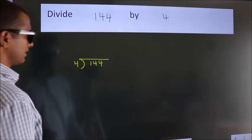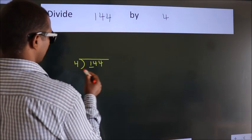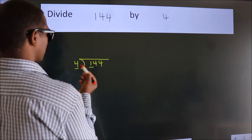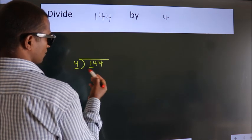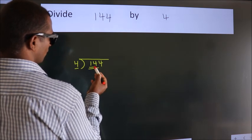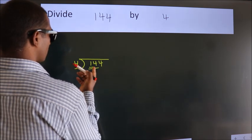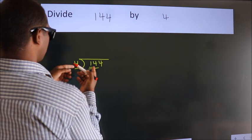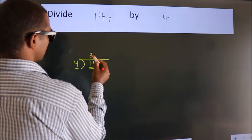Next, here we have 1, here 4. 1 smaller than 4. So, we should take 2 numbers, 14. A number close to 14 in 4 table is, 4 threes, 12.